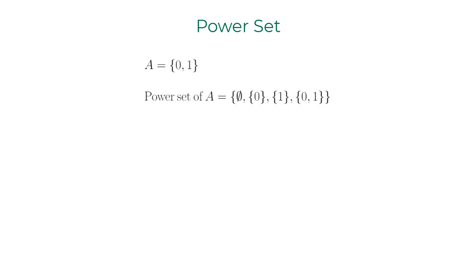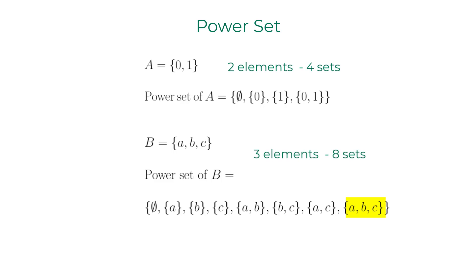Let us evaluate the power set containing three elements. By default, empty set is an element in the power set, then we have the sets with single elements, and then we have sets with two elements, and finally the original set. The power set of a set with two elements has four sets. The power set of a set with three elements has eight sets. Hence it is easy to prove that the power set of a set with n elements has 2 to the power n number of sets.